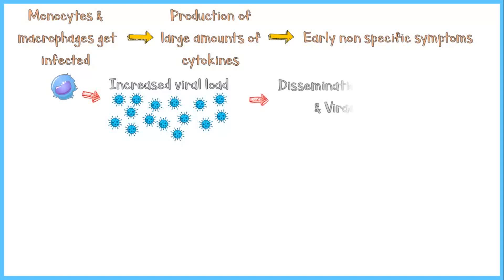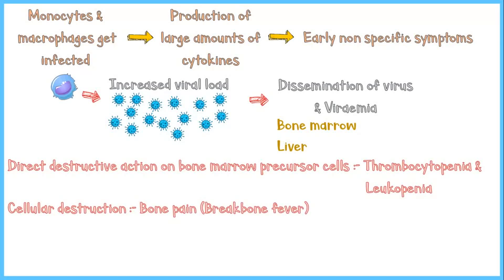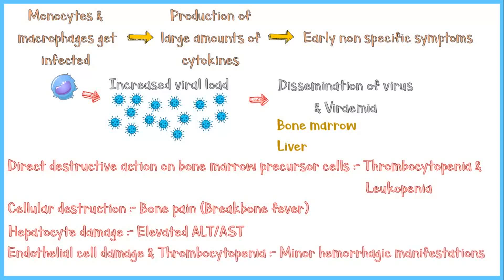The increased viral load results in dissemination of the virus via the bloodstream to vital organs including bone marrow and the liver. Direct destructive action of the virus on bone marrow precursor cells causes thrombocytopenia and leukopenia. Due to cellular destruction, the patient experiences severe bone pain — so severe it is also called break bone pain. Hepatocyte damage gives rise to elevated transaminases in blood, and due to endothelial cell damage and thrombocytopenia, the patient will have minor hemorrhagic manifestations.